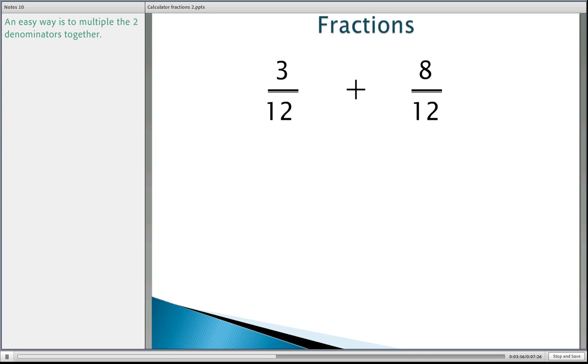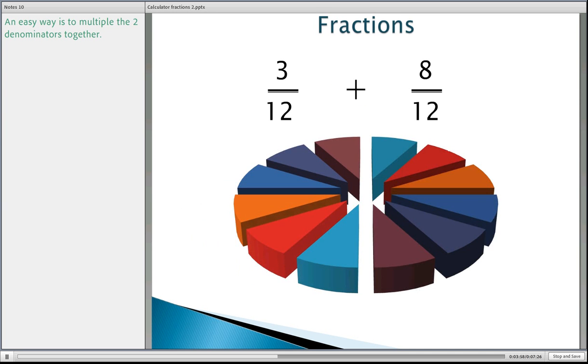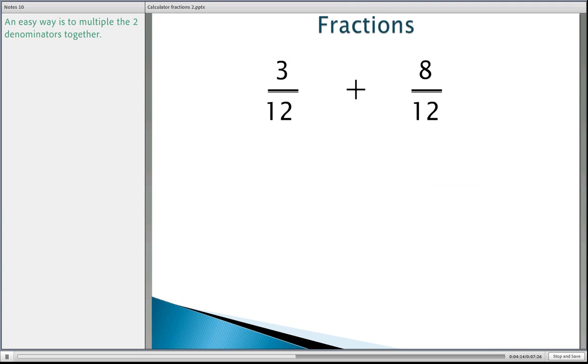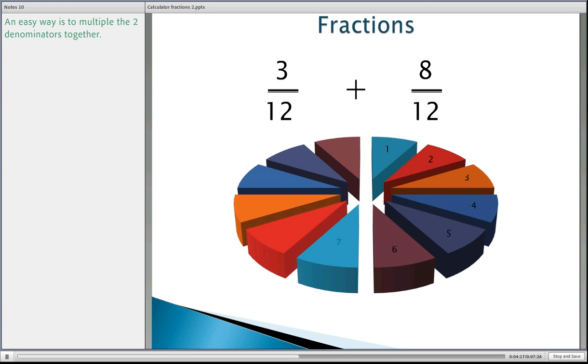Now we're going to add the whole lot together. So three twelfths plus eight twelfths. One, two, three is the first part for the three twelfths. Now we have one through eight. Which means we've only got one piece left. So three twelfths plus eight twelfths. So let's just go right around now. Notice we've got one left. So three twelfths plus eight twelfths equals eleven twelfths. Now we're going to show you how to put this into your calculator.